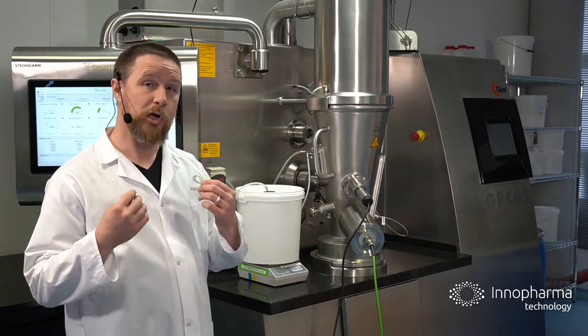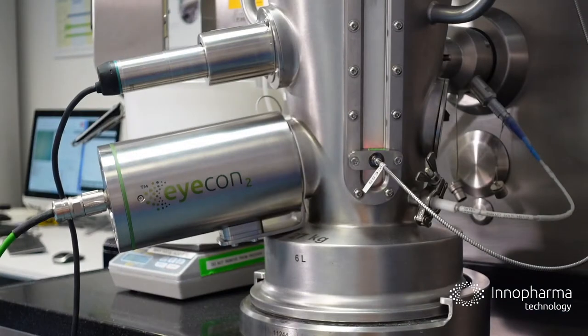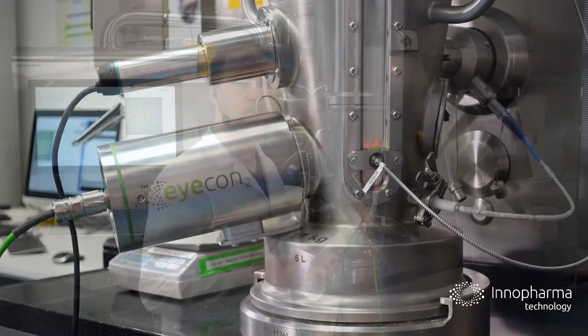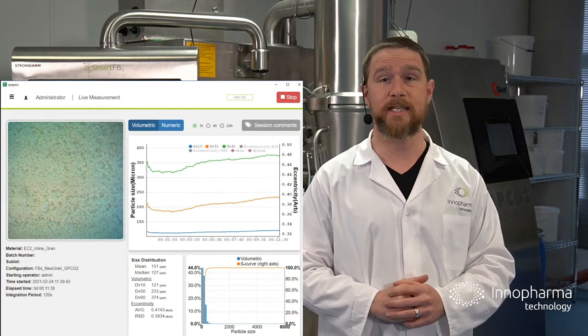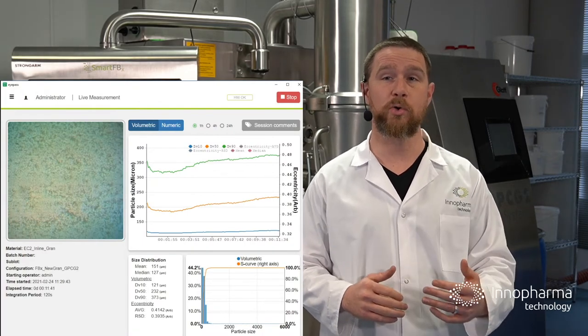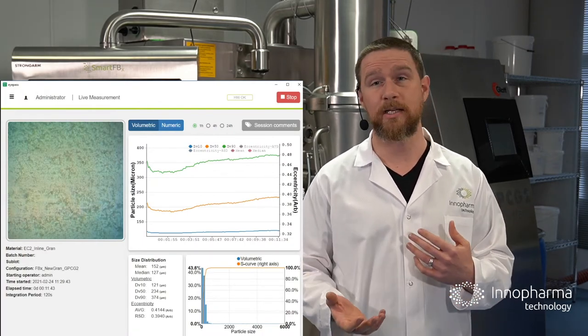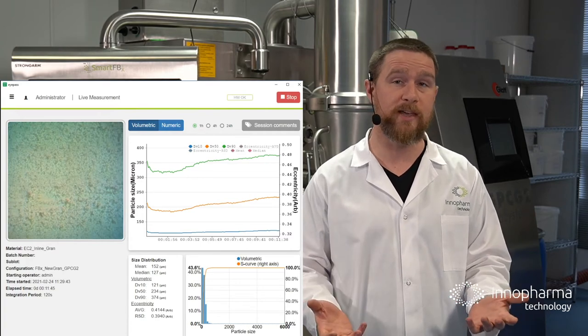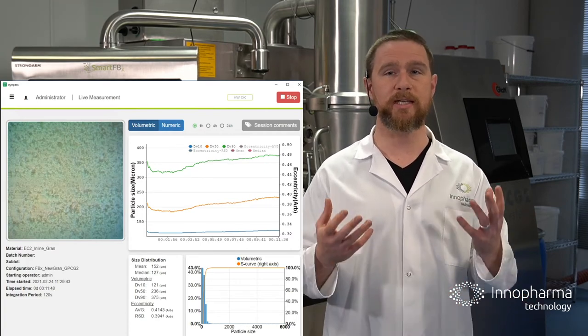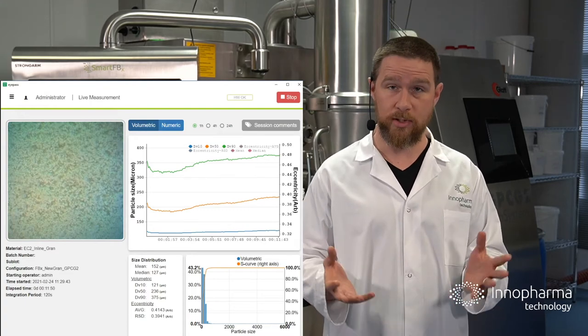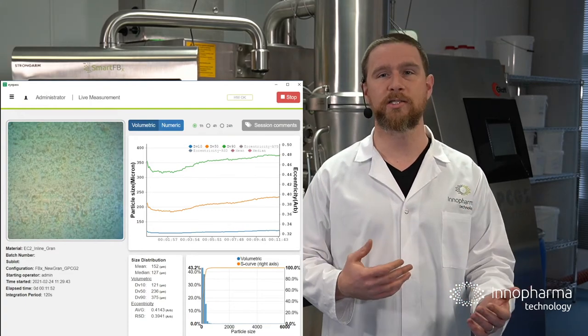Now if we take a closer look at what's happening inside the process, we can see the ICON2 is measuring in a non-product contact, non-destructive fashion through a pre-existing process window here. And when we look at the software iPass, we can see the live D10, D50, D90 data which has been automatically recorded and stored. This is particularly useful for continuous process verification environments, and this data can be used for building automated particle size control into your process via protocols such as OPC.